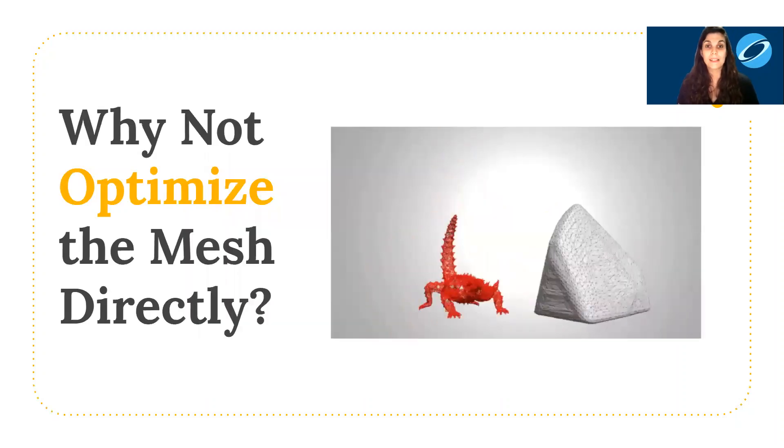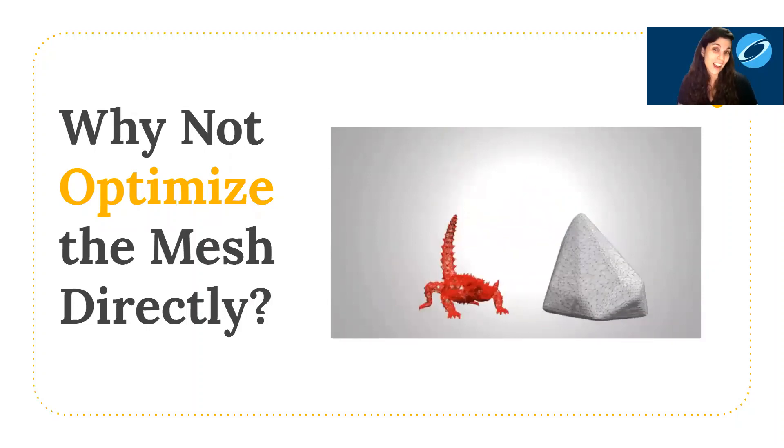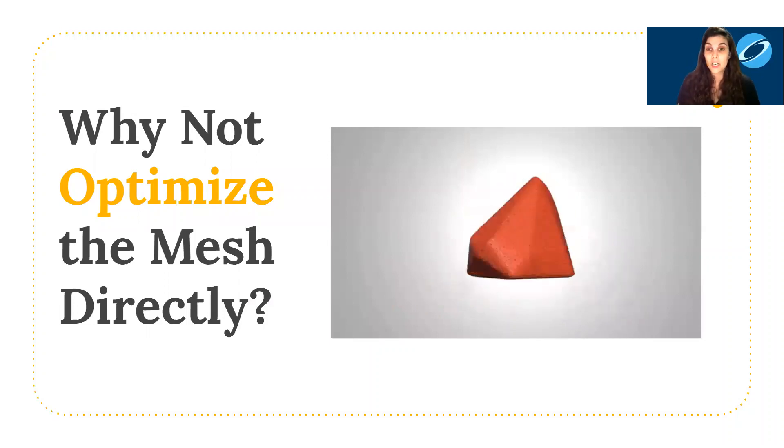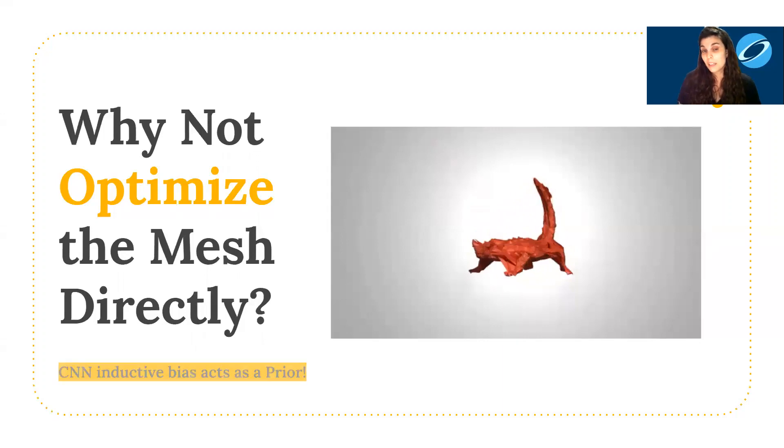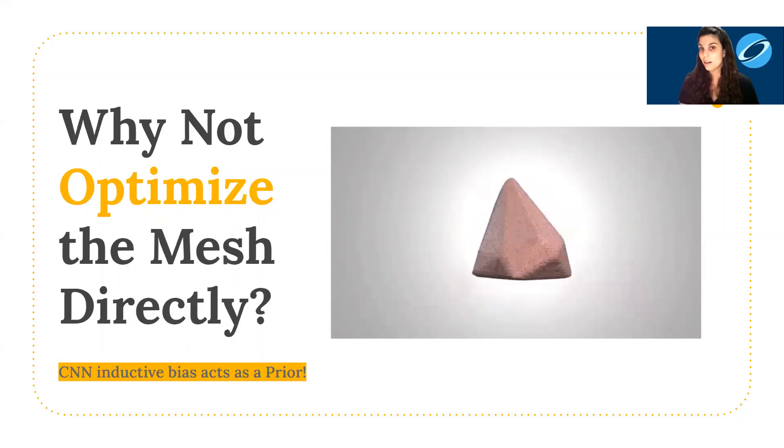We said we optimize the CNN weights to displace the vertices of the mesh, but why not just optimize the mesh vertices directly? Well, we said there are many valid solutions, and as it turns out, a direct optimization leads to an undesirable result. But if we optimize the CNN weights instead, their inductive bias acts as a powerful prior which leads to a favorable reconstruction.